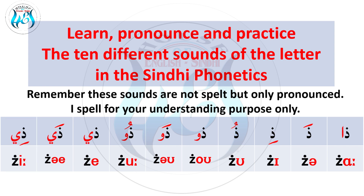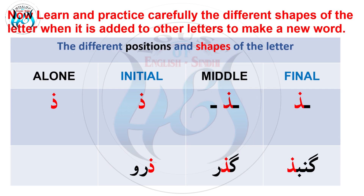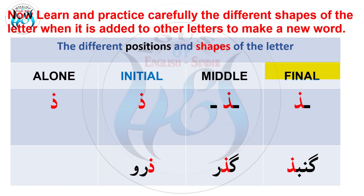Pronounce again. The different positions and shapes of the letter — Initial: zero; Middle: guzar; Final: goombas. That's the end of the lesson.